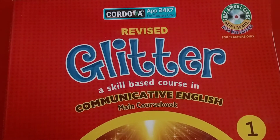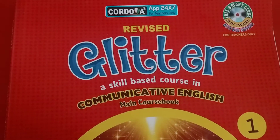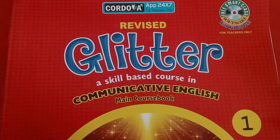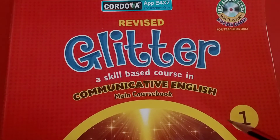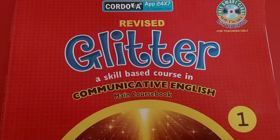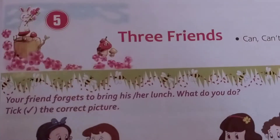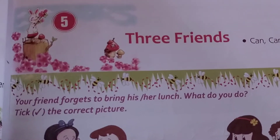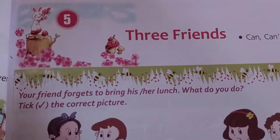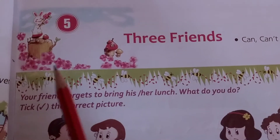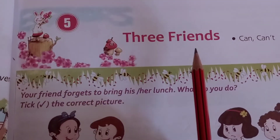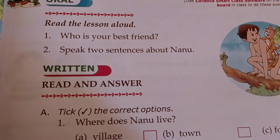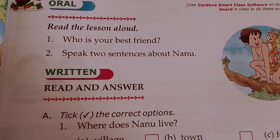Hello kids, this is your English book Glitter of class first. Today we will do exercise of lesson number 5: Three Friends. Let's do exercise.